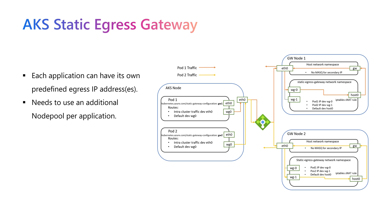The add-on will create an internal load balancer attached to the gateway node pool, and to that internal load balancer it will also attach the public IP addresses used for egress traffic. So the traffic coming from your pod, instead of leaving the cluster through the cluster's load balancer, will be redirected to the gateway node pool, then to the internal load balancer, and the right IP address will be used to reach the internet.